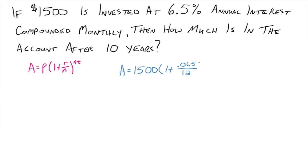All right, if it was compounded quarterly, then n would be 4 for 4 times a year. If it was compounded daily, then n would be 365, because we're not going to worry about leap year. All right, so that's the idea.